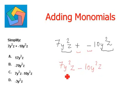So we will consider only the coefficient, that is 7 and 10. 7 minus 10 is negative 3, and the variables remain as it is. So we get negative 3y²z as the answer, which corresponds to option D.